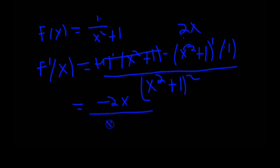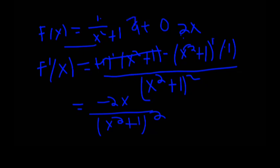So here you have to find the derivative of this at 0. f(0) is a function of 1, so the derivative at x equals 0 is 0.